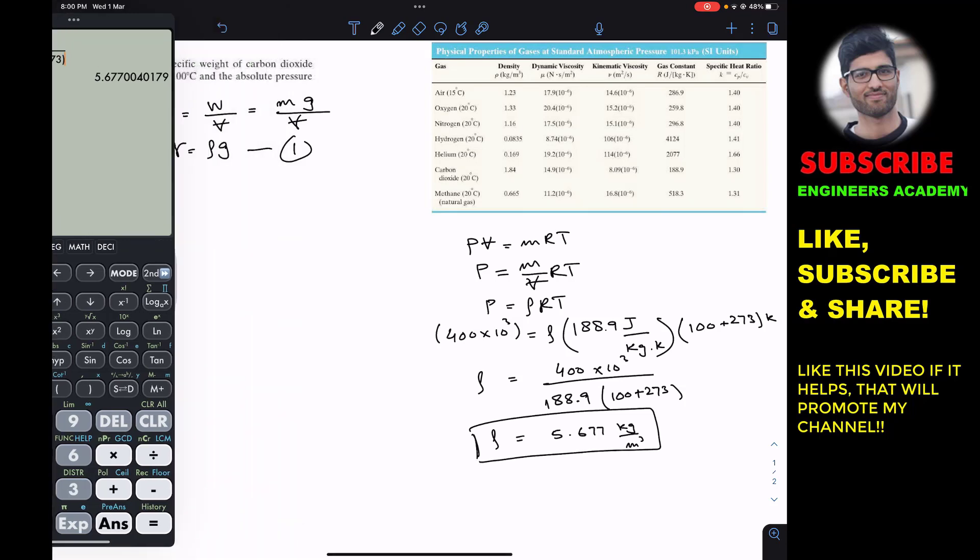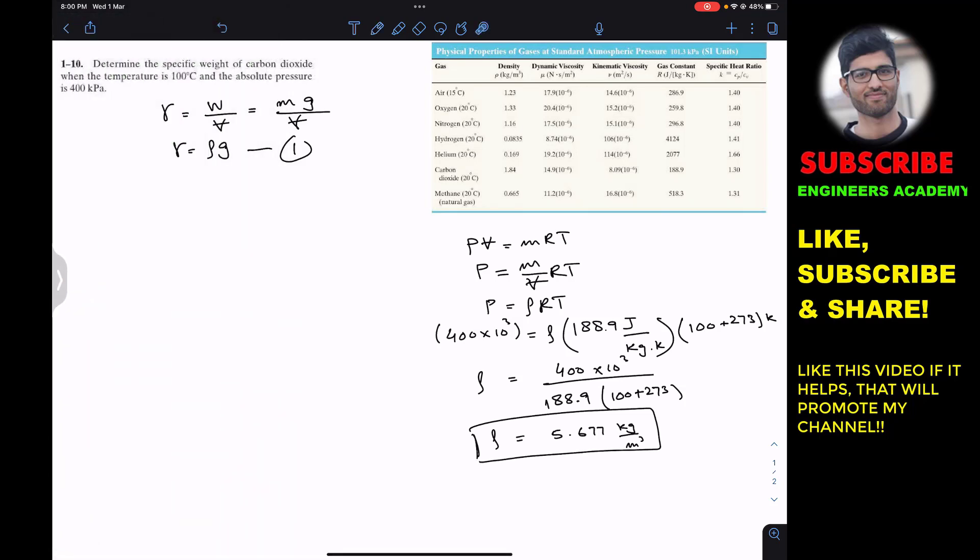Now if I plug in this value in equation number one, we will get the specific weight at that particular condition. The specific weight of the carbon dioxide is 5.677 times g, which is 9.81.